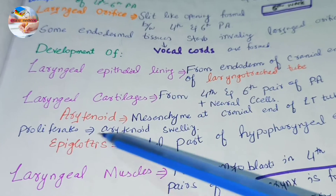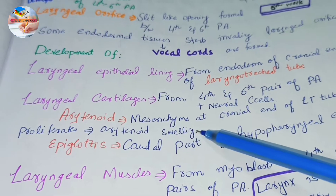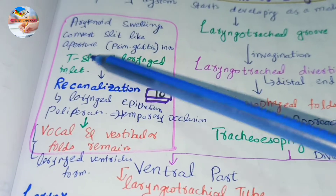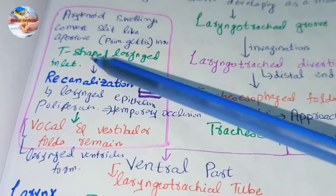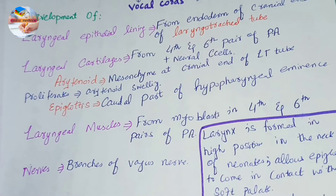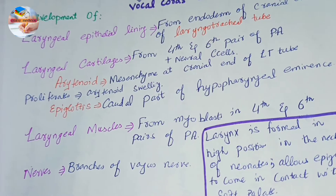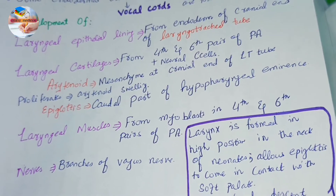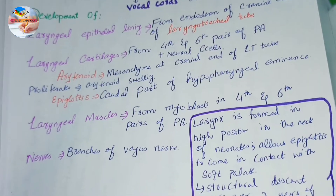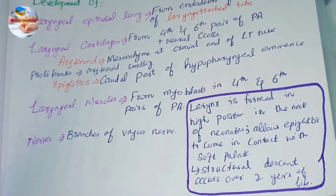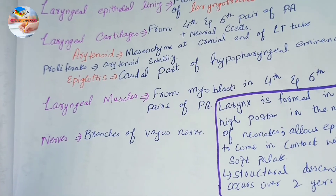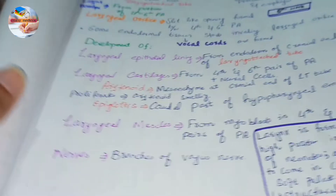The mesenchyme at the cranial end of the laryngotracheal tube proliferates to form the arytenoid swellings. These arytenoid swellings convert the slit-like aperture — the primordial glottis — into a T-shaped laryngeal inlet. The epiglottis is formed from the caudal part of the hypofaryngeal eminence. The laryngeal muscles are derived from myoblasts in the fourth and sixth pair of pharyngeal arches, and the nerve supply of the larynx is derived from branches of the vagus nerve.